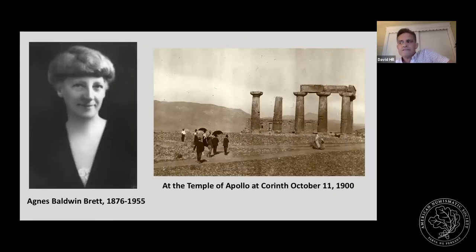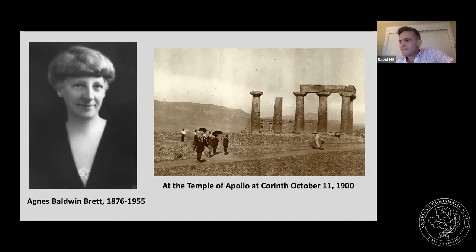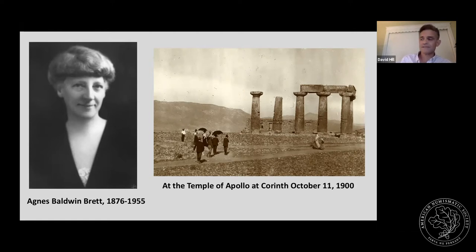Huntington also funded the first professional staff. The first salaried curator hired was Agnes Baldwin Brett in 1909 — a Greek and Roman specialist, seen here with a group from the American School of Athens in Greece. Huntington is considered advanced in his thinking because he subscribed to the idea that curators should become specialists in the objects they cared for, rather than the prevailing idea of mostly catering to visitors — a notion that came out of Germany. He also felt that women were especially suited to this kind of work, and from the start the Hispanic Society regularly hired women as curators and librarians.